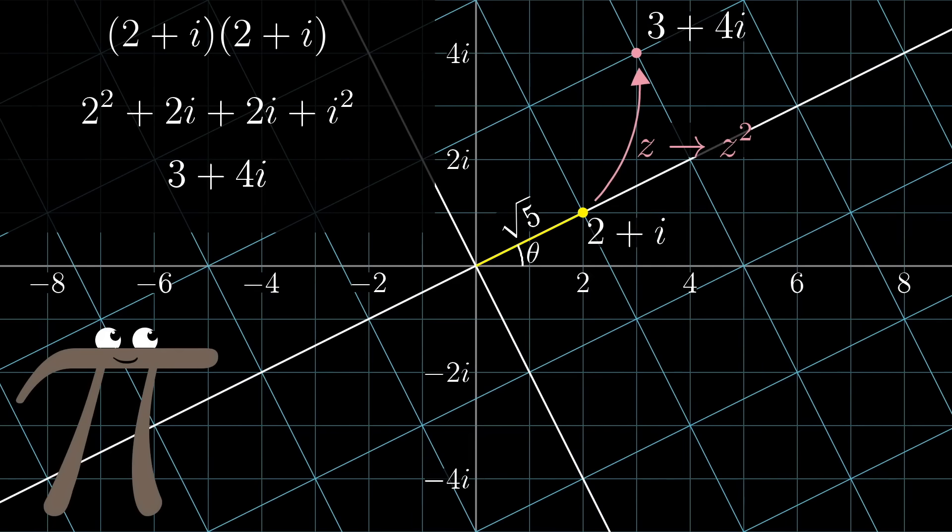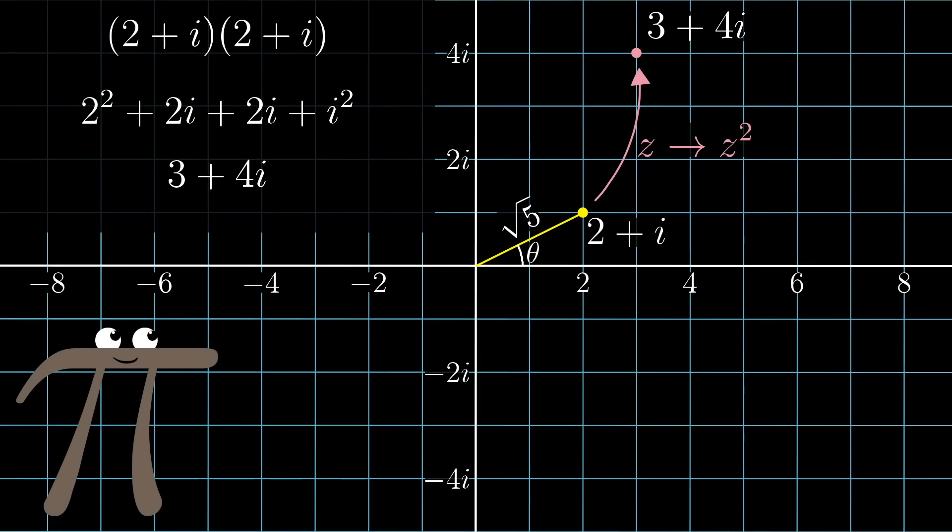So when you multiply the number by itself, the effect is to double that angle, and importantly, to square its length. Since the length started off as the square root of some whole number, this resulting length is guaranteed to be a whole number, in this case 5.